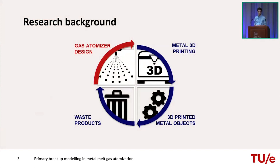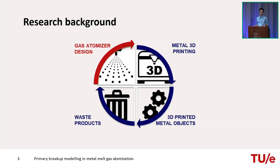Gas atomisation is motivated by additive manufacturing — a rapidly growing technique enabling a circular economy: printed products can be recycled back into metal powder as starting material for 3D printing again. Gas atomisation is typically used for metal powder production for metal 3D printing. However, currently gas atomisation is a black box — there are some known parameter settings that work, but detailed understanding is limited.